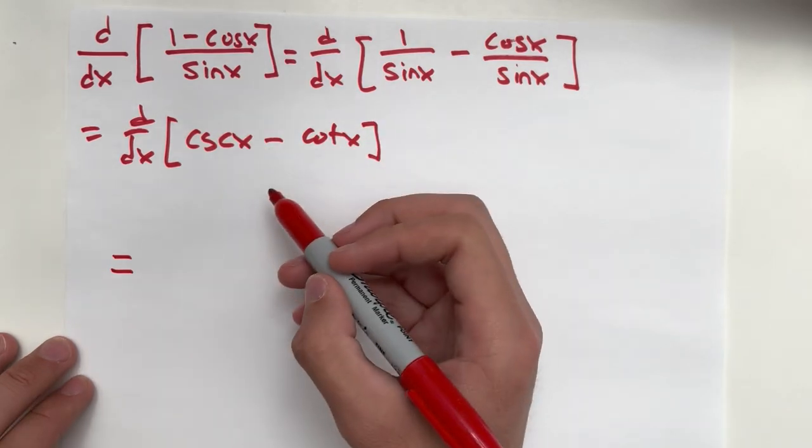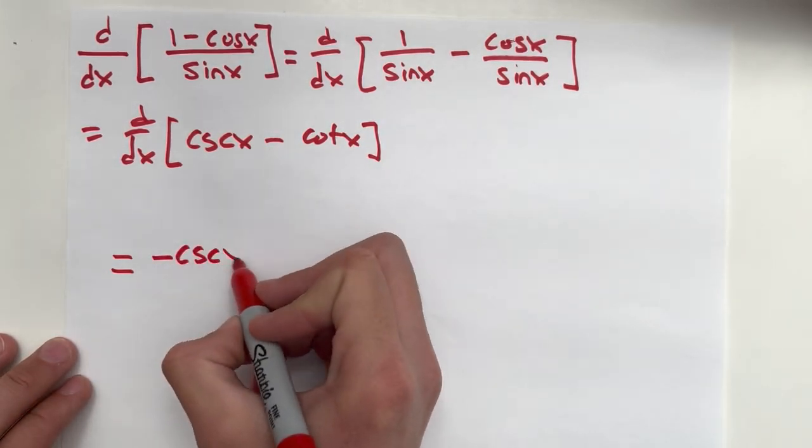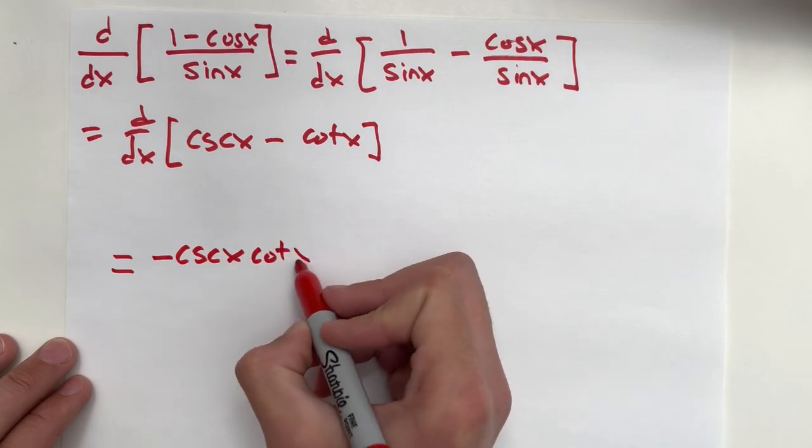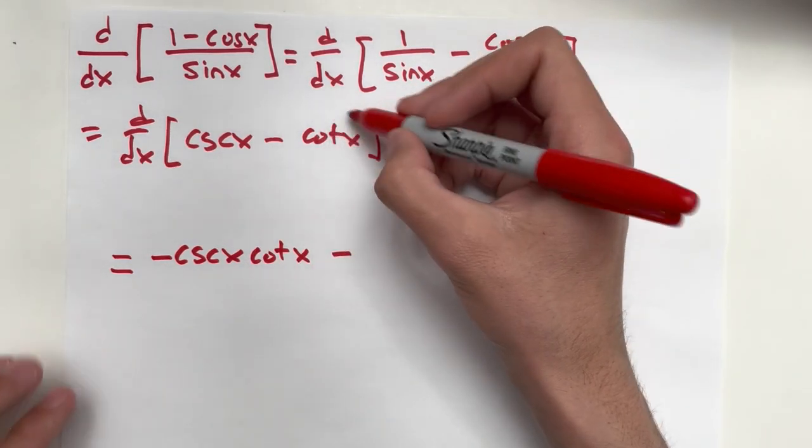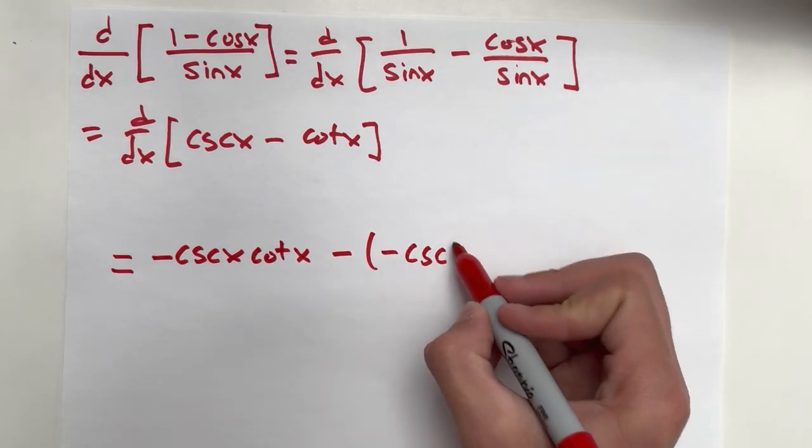So the derivative of cosecant x is going to be negative cosecant x cotangent x minus, now the derivative of cotangent x is going to be negative cosecant squared x.